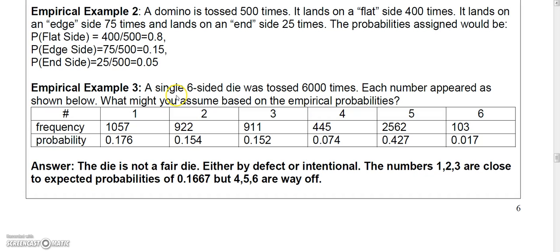Another example would be if you took a six-sided die and tossed it 6,000 times. And suppose each number appeared as below. So let's say 1,057 times you got a 1. So if you take 1,057 and divide it by 6,000, that's 0.176.